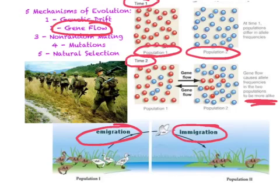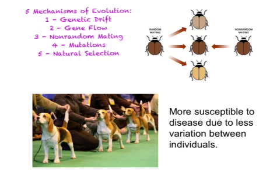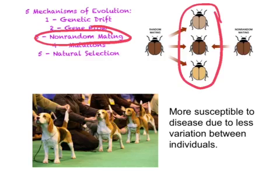Another condition that can disturb genetic equilibrium is non-random mating. While random mating results in several different types of offspring, rarely do organisms randomly mate. Usually, organisms mate with individuals in close proximity or those who are very similar, creating less varied offspring. This can promote inbreeding and lead to changes in allelic proportions that favor individuals who are homozygous — whether dominant or recessive — for particular traits. For example, purebred dogs are very inbred because breeders want to maintain the same breed traits. Purebred dogs are significantly more at risk for diseases than mutts because there is less variation between them. Non-random mating causes the population to not be in Hardy-Weinberg genetic equilibrium.